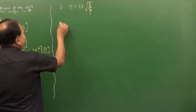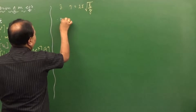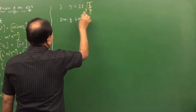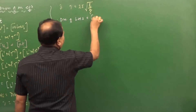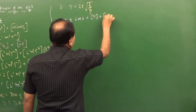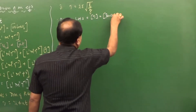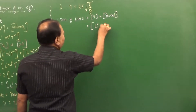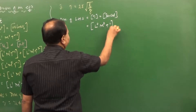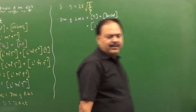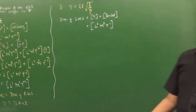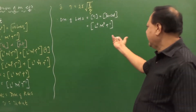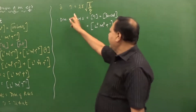First, we take the left hand side. The dimension of LHS — T here is the period. The dimension of period is L⁰M⁰T¹. Left hand side is only one term.